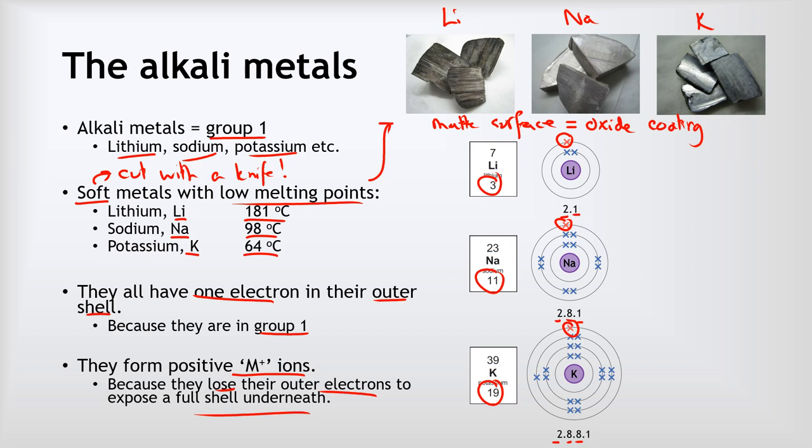So for lithium that looks like this. This outer electron here goes, and we end up with just an electron configuration of 2. We end up forming a lithium plus ion because if you lose an electron, because electrons are negative, you end up positive.